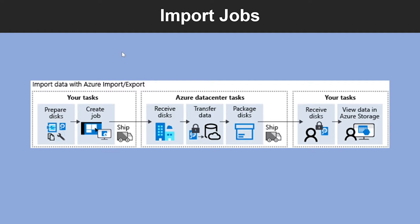Now let's look into the steps involved in importing a job. First, you have to create a storage account. Then identify the number of disks you will need to accommodate all the data you want to transfer. Then identify a computer that you will use to perform the data copy. Attach the physical disk that you will ship to the target Azure Data Center and install the WAImportExport tool. Then run the WAImportExport tool to copy and encrypt the data and generate the journal files.